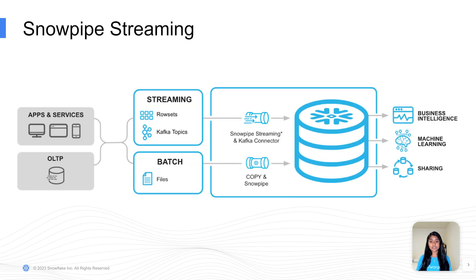As a bonus, Snowflake offers another feature called Snowpipe streaming for low-latency loads of streaming data rows, which is different from Snowpipe. Check out the Snowpipe streaming section if you're interested to learn more.